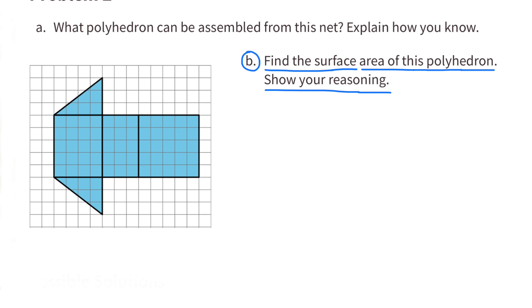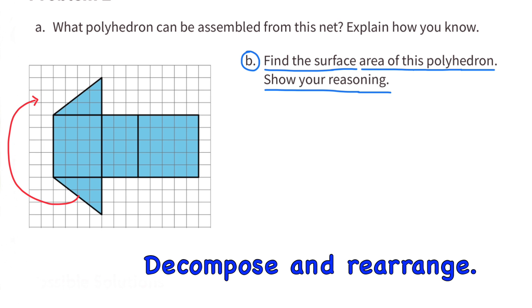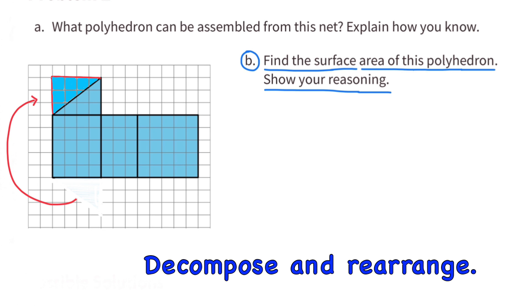Find the surface area of this polyhedron. Show your reasoning. To find the surface area of this polyhedron, I'm going to decompose and rearrange. Moving this triangle and joining it with the other triangle forms a rectangle.